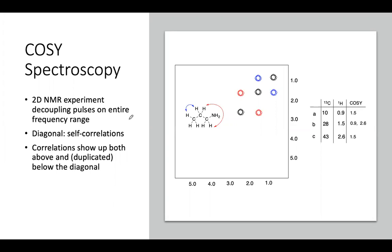COSY is really a homonuclear decoupling. So it's in the same nuclei. We're looking, we're irradiating a proton and observing protons. But we're doing a decoupling pulse over the entire frequency range and getting the correlations in one experiment.